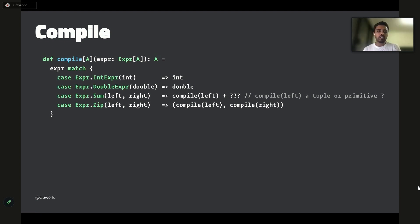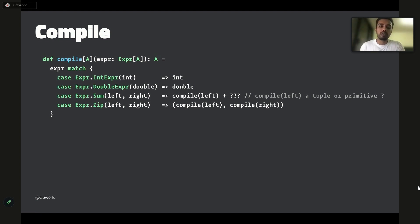That makes sense because the left could compile down to a primitive or to a product, so we need to know how to add a product, how to add two primitives, or even nested products and nested tuples. This is a small problem that can get super confusing when it comes to a larger language for your application code.